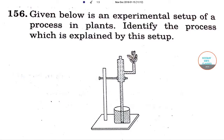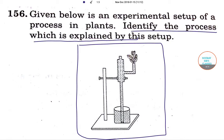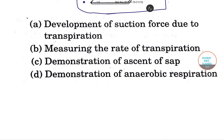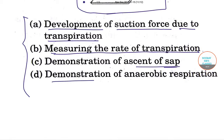Hi students, welcome to short officer classes. Now we have an experimental setup we can see here. We have to identify the process by which this can be explained, and we have four options. The first one says development of suction force due to transpiration, the second is measuring the rate of transpiration, the third is demonstration of ascent of sap, and the fourth is demonstration of anaerobic respiration.